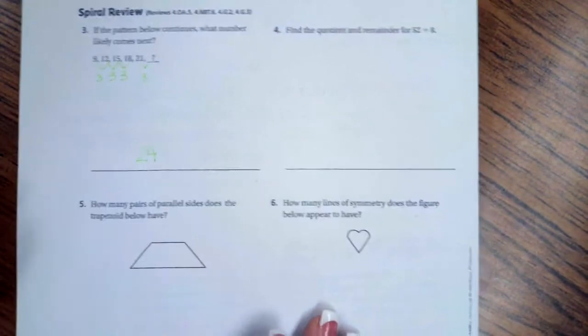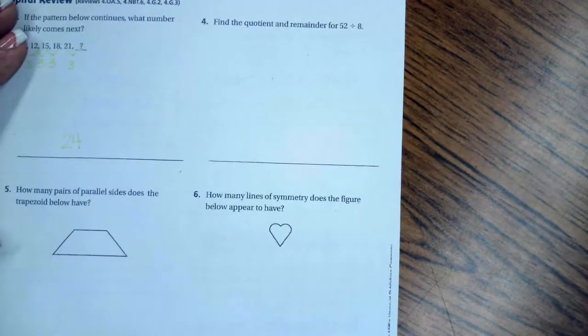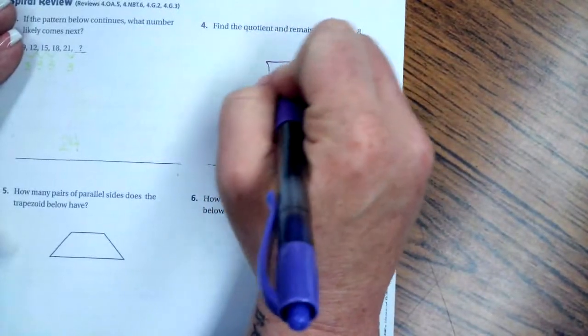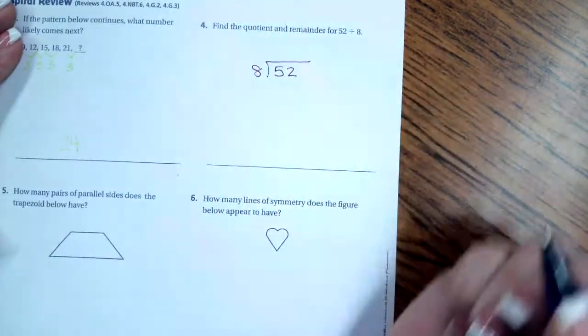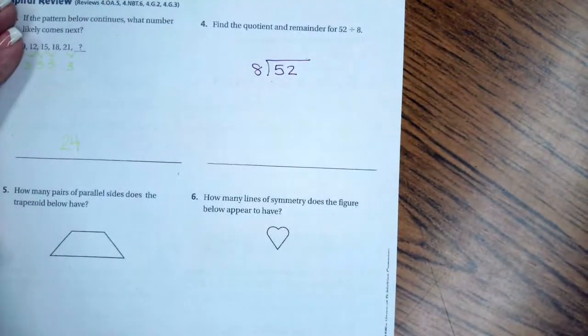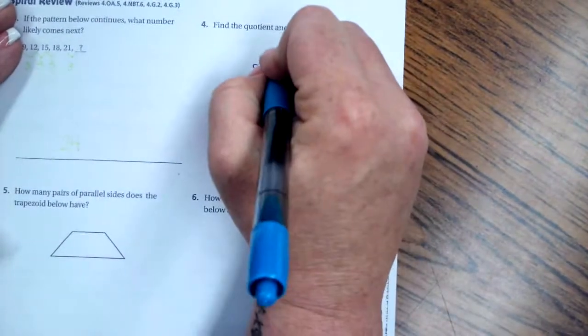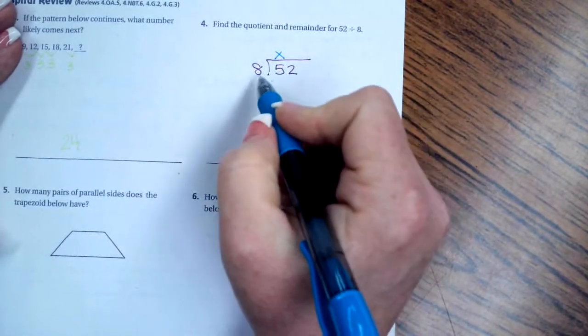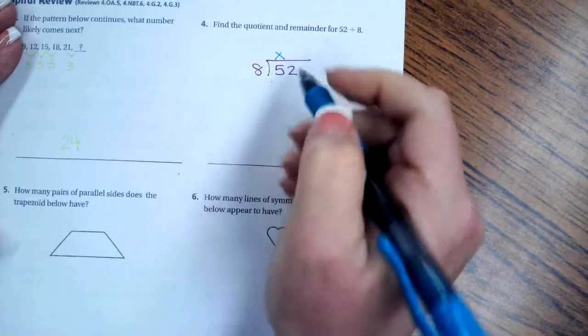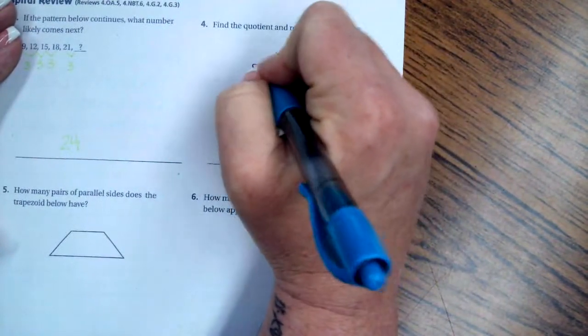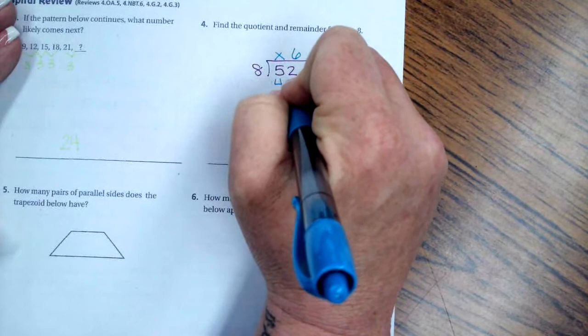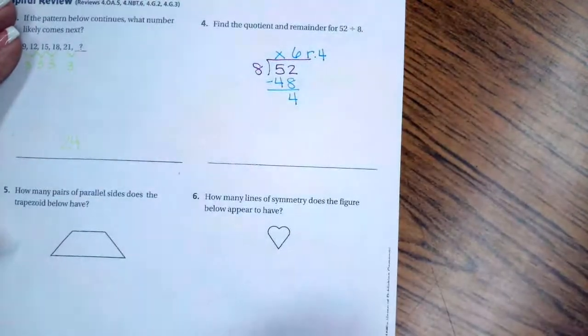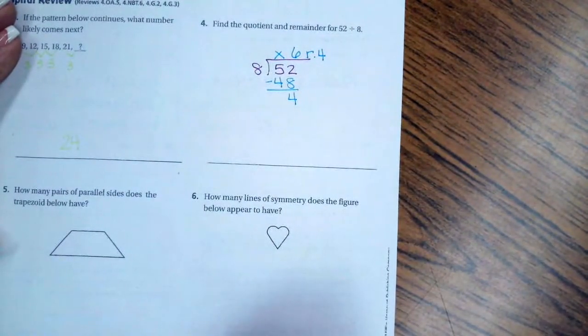We're going to go ahead and look at number 4. It says to find the quotient and remainder for 52 divided by 8. Well, 8 cannot go into 5. I'm going to put a placeholder there, because I need to make sure that I've lined up my columns. And I know that 6 times 8 is 48, so that's going to be a 6. Now, 6 times 8, I said, was 48. When I subtract, I get 4 left over. It's going to be 6, remainder 4. That's it.